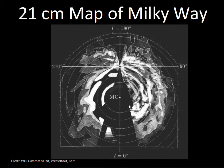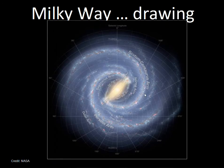Our map of the Milky Way is accomplished using 21-centimeter radio information, where we can see concentrations of cold hydrogen gas forming our spiral arms. We don't get the best picture because we're not outside the Milky Way looking down, but we do have definite concentrations of hydrogen gas forming spiral arms. Here's a drawing showing the spiral arms and the bar structure of the nucleus of our galaxy.